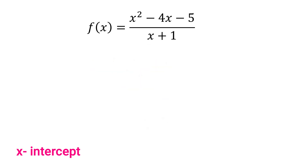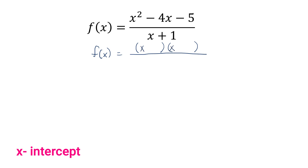Next example: f(x) = (x² − 4x − 5) / (x + 1). Step 1 is to reduce the rational function to lowest term. Since the numerator is still factorable, we factor it out. Its factors are two binomials. Factoring x² gives x and x; factoring the last term, negative 5, gives 5 and 1.